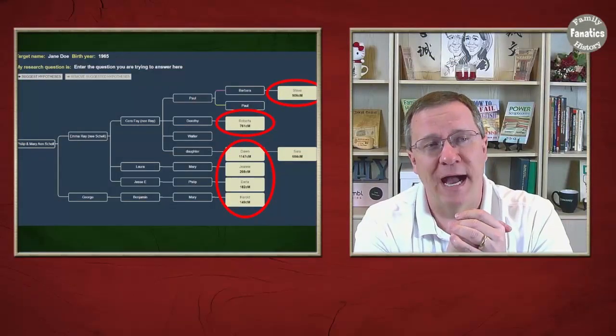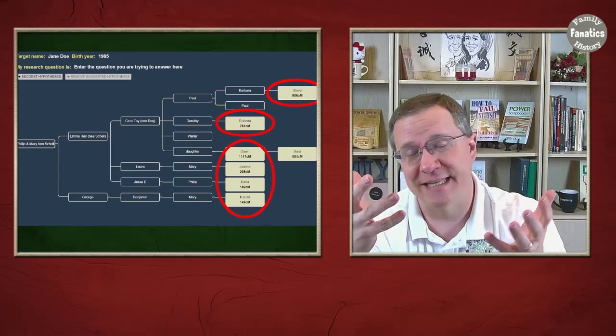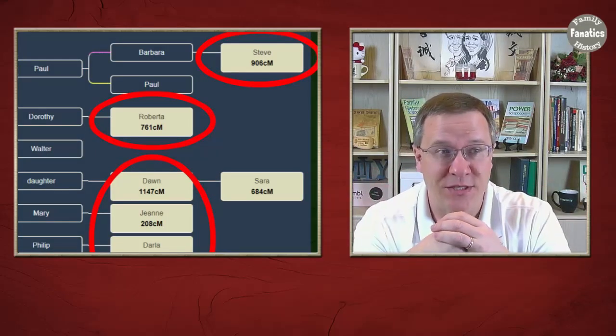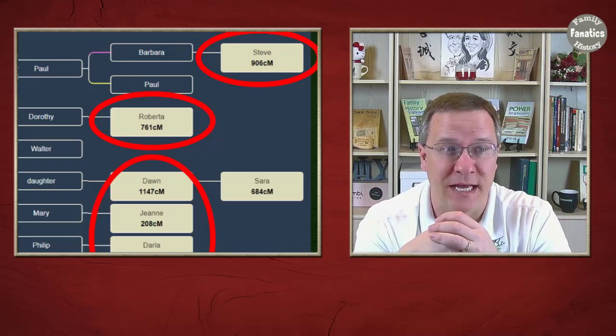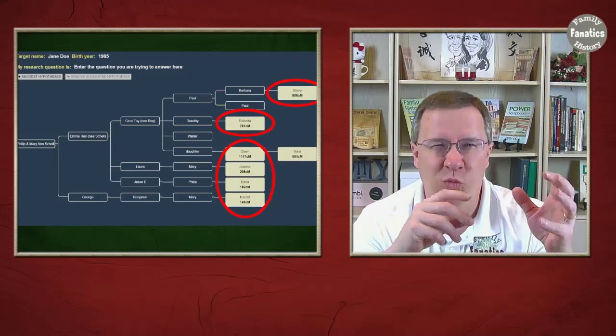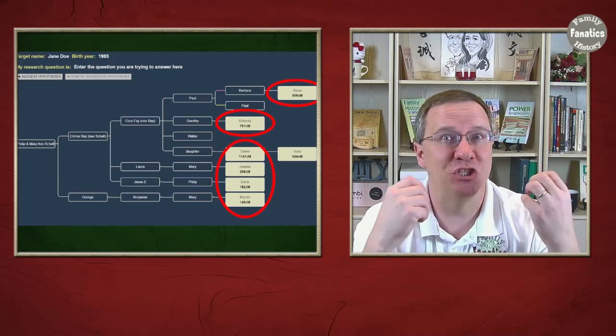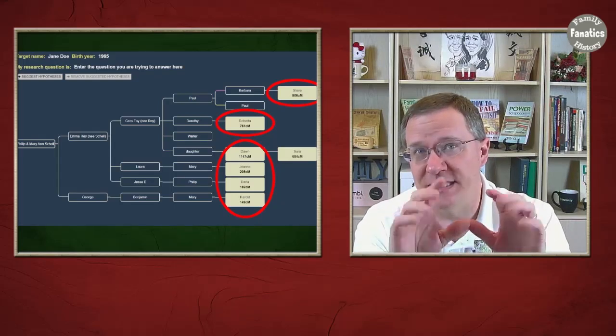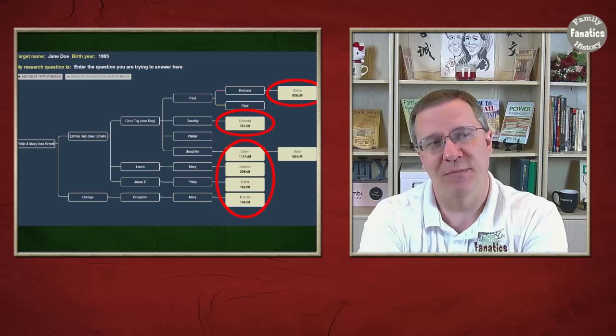In WATO here I have now added in all of the DNA for these target people, and you can actually see that this has some people that are pretty closely related. They share 900 centimorgans in one case with the target person or 1147 centimorgans in another case. This is actually going to be a really simple WATO tree just because I have all these matches that share a huge amount of DNA with my target person. Every WATO tree is not necessarily going to be this easy, but I have gone in and I have put all that DNA information in.